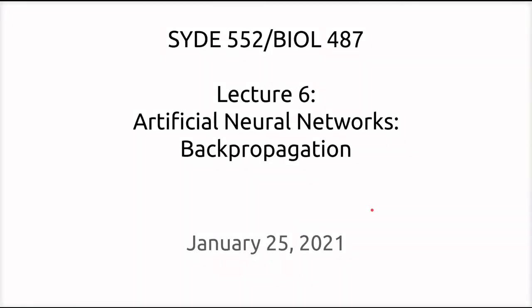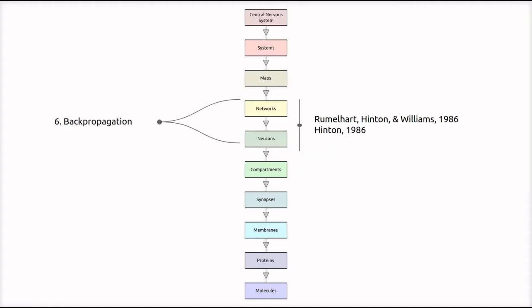Hello everyone, and welcome to lecture 6 of computational neuroscience on backpropagation in artificial neural networks. In the bigger scheme of the course, we're still dealing at a level of abstraction of neurons and networks of neurons, and we're covering material that was developed originally in the 1980s by Rumelhart, Hinton, and Williams.